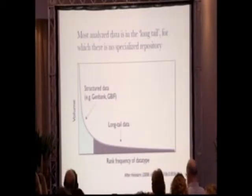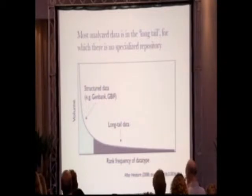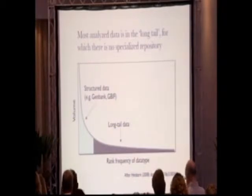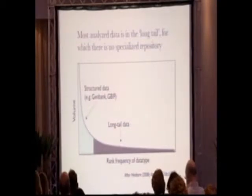Long tail data includes spreadsheets of measurements that are idiosyncratic — where some graduate student devised a unique format because that study has never been seen before and may never be seen again. While each individual dataset may be idiosyncratic, it can be reused by other specialists if it's adequately documented. Collectively, long tail data probably comprises most of the valuable processed data that underlies the scientific literature. So we need to come up with a solution for archiving long tail data, since we're not going to have a specialized repository for every data type in the world.